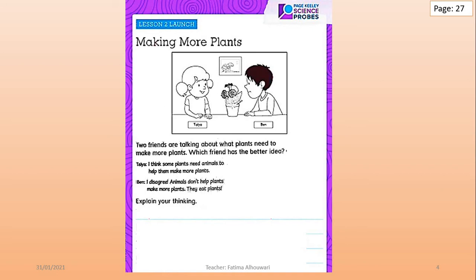What about Penn? Penn said, 'I disagree. Animals don't help plants make more plants. They eat plants.' What do you think? Is this correct? Think about it, and explain your thinking in this space. When you finish, replay again.